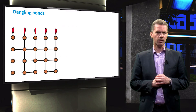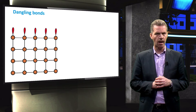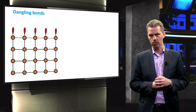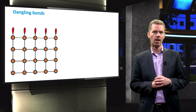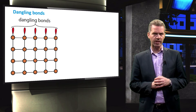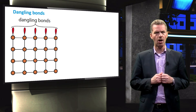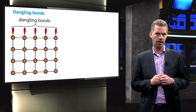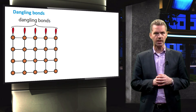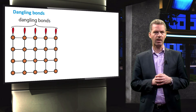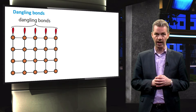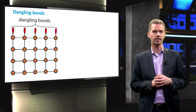At the surface of a semiconductor, where the crystal lattice terminates, many valence electrons cannot find a partner for creating a covalent bond. This results in so-called dangling bonds, which in essence are localised defects that may trap a charge carrier. Once a charge carrier is trapped by this defect, this carrier cannot move around freely anymore — hence we say that it is localised.